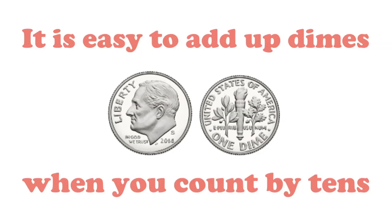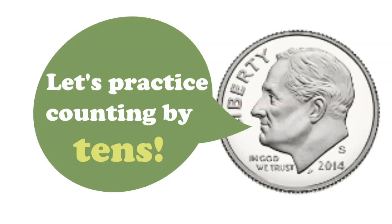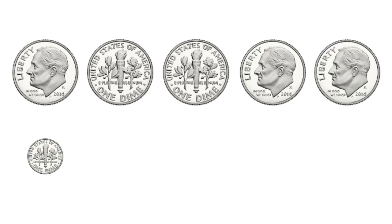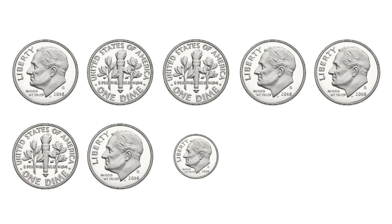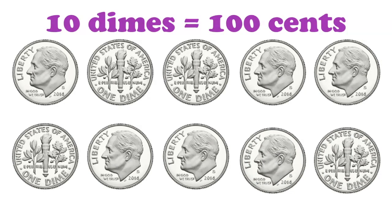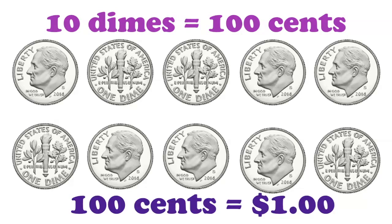It is easy to add up dimes when you count by 10. Let's practice counting by 10. 10, 20, 30, 40, 50, 60, 70, 80, 90, 100. Ten dimes equals one hundred cents. One hundred cents equals one dollar.